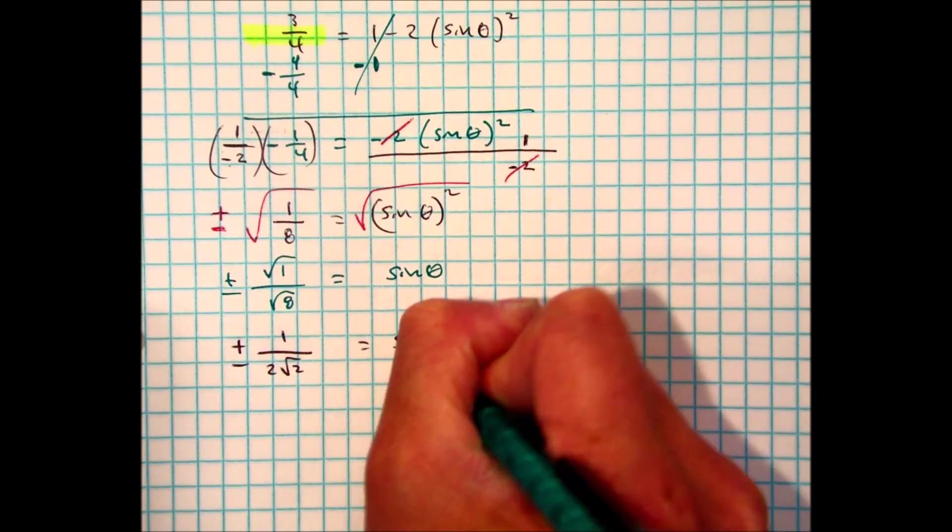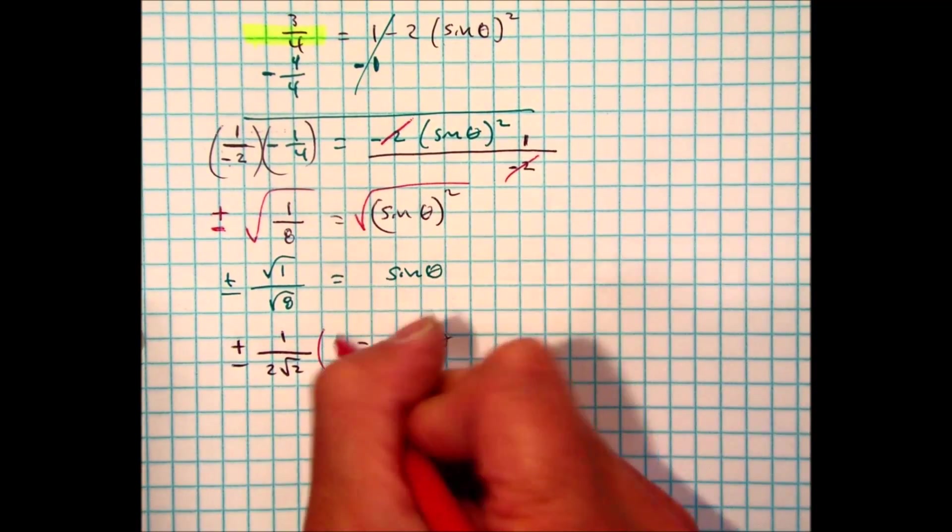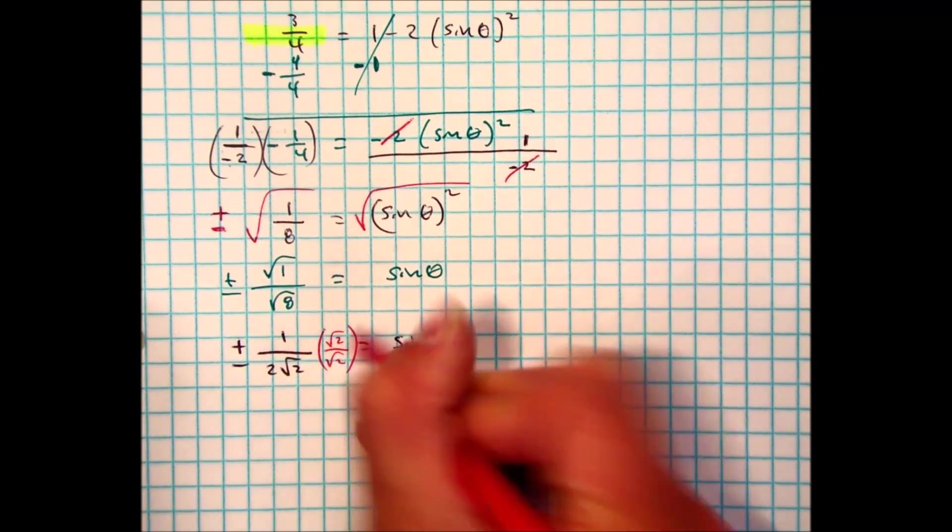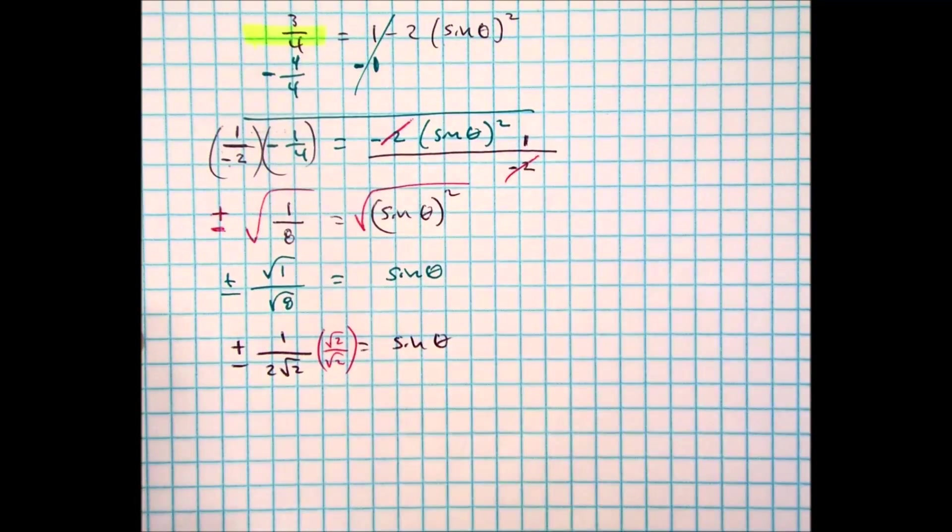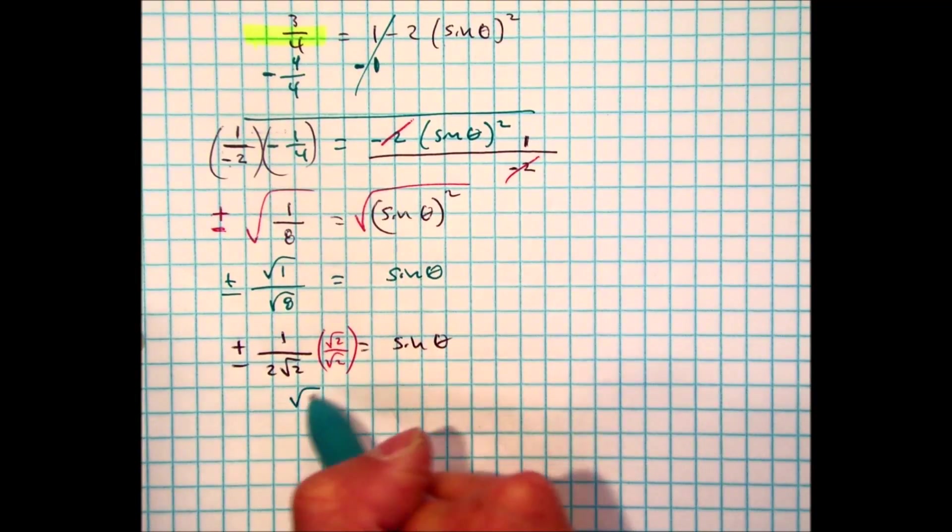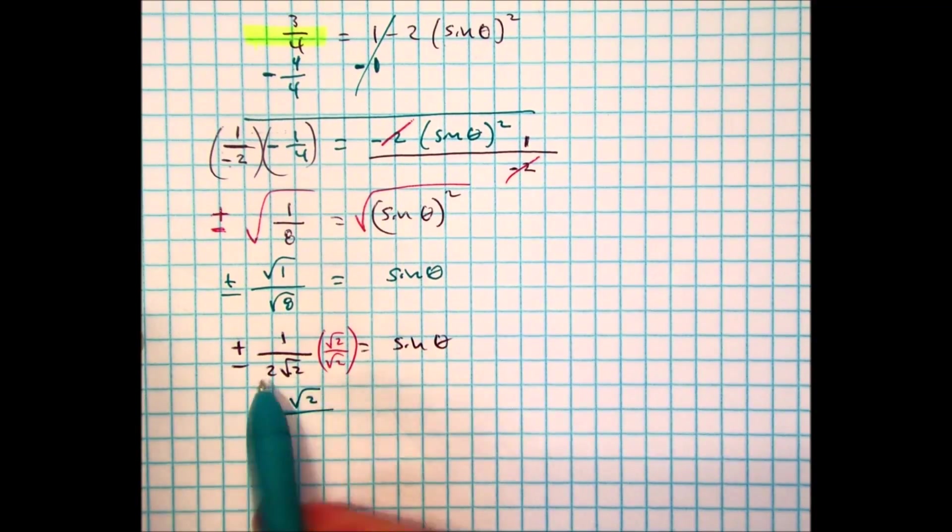I'm not going to leave that radical by itself. I need to multiply by radical 2 over radical 2. Essentially here, I'm just multiplying by 1. Multiply across. Radical 2 times radical 2 is radical 4, which is 2. And then 2 times 2 is 4.